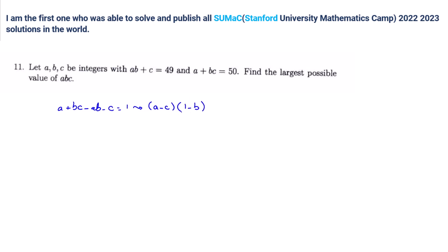So let's check: A minus A, B plus B, C, minus C is 1. And pay attention, they are integers, okay? They are not real numbers. So, can you tell me what are the cases of these two brackets?